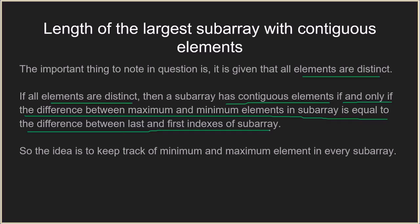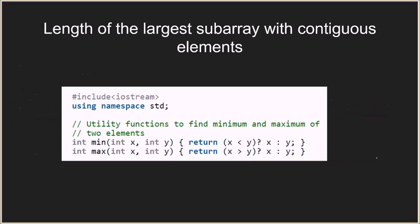Considering the previous example, the largest contiguous subarray had elements from 90 to 94. The difference between the maximum and minimum elements was 94 minus 90, which is 4, and the difference between the last and first index was 4 minus 0, which is also 4. This condition always holds true for any subarray with contiguous elements. We will use this fact and keep track of the minimum and maximum in every subarray.